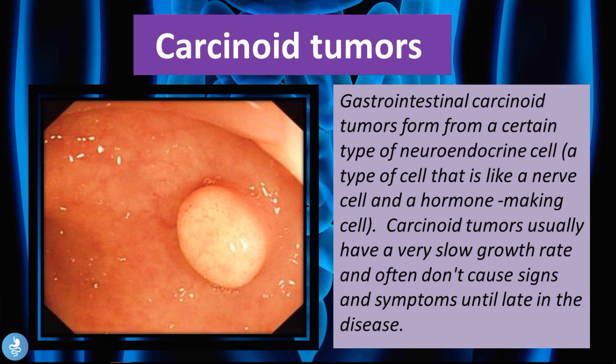Carcinoid tumors form from neuroendocrine cells — a type of cell that is both a nerve cell and a hormone-making cell. These tumors usually have a very slow growth rate and often don't cause any signs and symptoms until late in the disease.